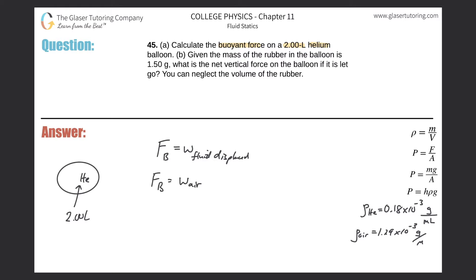How do we find the weight of the air? We know that weight equals mass times gravity, so it's the mass of the air multiplied by gravity. Now I need to figure out what the mass of the air is that this helium balloon had to displace.